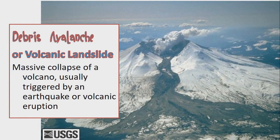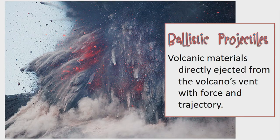Next is debris avalanche or volcanic landslide — a massive collapse of a volcano, usually triggered by an earthquake or volcanic eruption. And the last one is ballistic projectiles — volcanic materials directly ejected from the volcano's vent with force and trajectory.